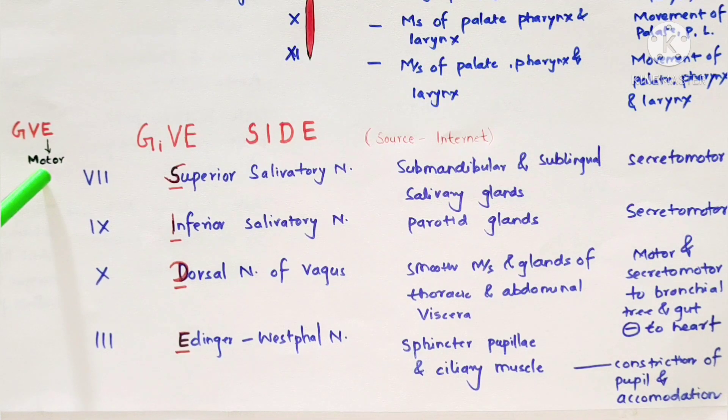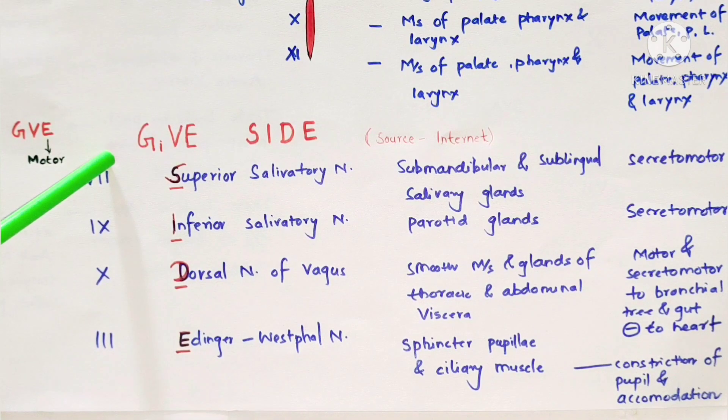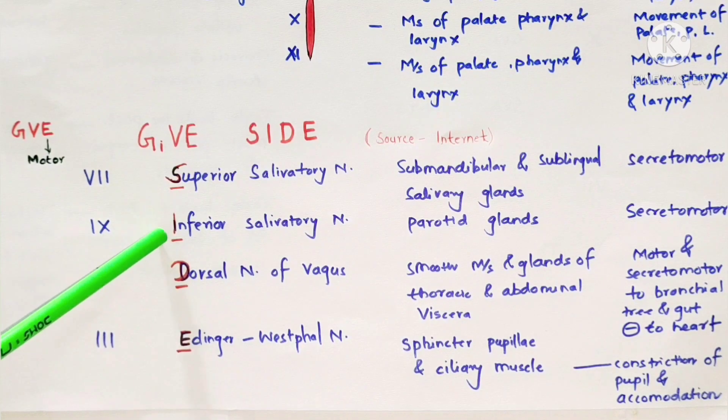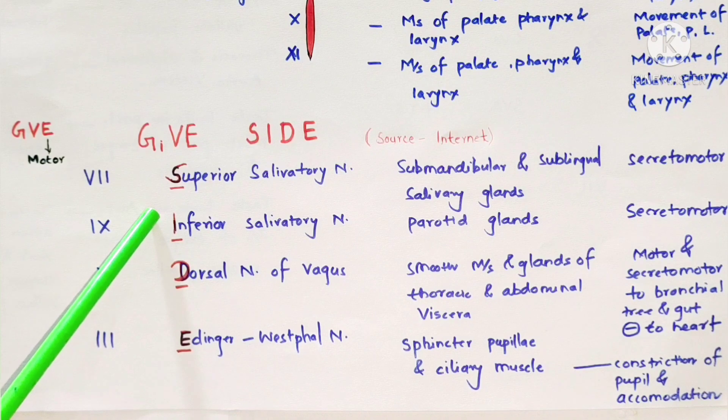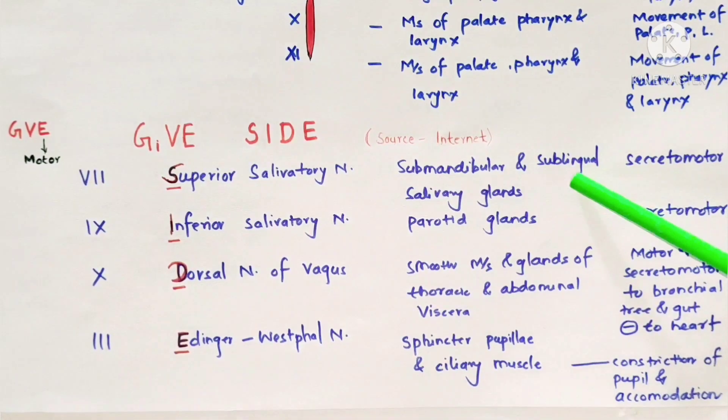Accessory nerve supplies motor nerve to smooth muscles, cardiac muscles and glands. General visceral efferent provides motor nerve to smooth muscles, cardiac muscles and glands. GVE includes dorsal nucleus of vagus.